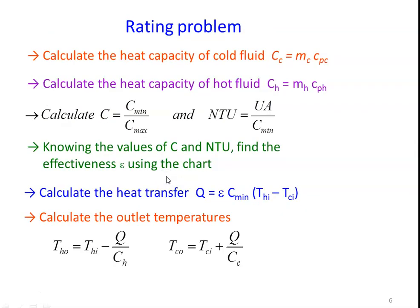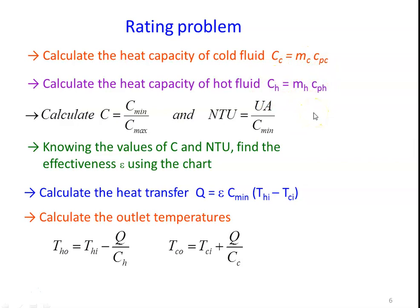The procedure for the Rating Problem: first, calculate the heat capacity of the cold fluid, Cc equals Mc·Cpc, and the heat capacity of the hot fluid, CH equals MH·CpH. Then calculate the ratio C minimum by C maximum — among the two values, one will be minimum and another will be maximum. Then calculate NTU equals UA by C minimum. Knowing C and NTU, find the effectiveness from the Effectiveness-NTU chart.